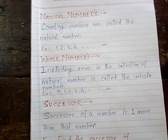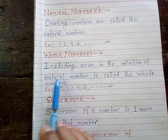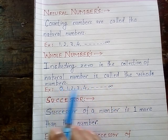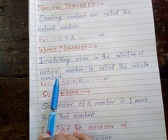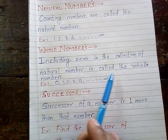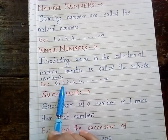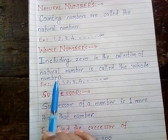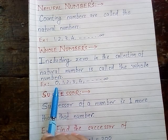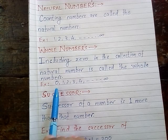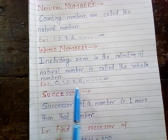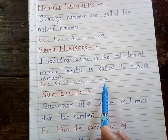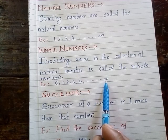Now let us start our new topic: whole numbers. Including 0 in the collection of natural numbers is called the whole numbers. For example, 0, 1, 2, 3, 4, up to infinite. So which is the smallest whole number? 0 is the smallest whole number. And we cannot find the biggest whole number, so we apply one symbol that stands for infinite or undefined value.